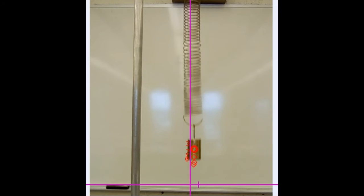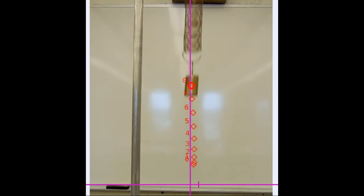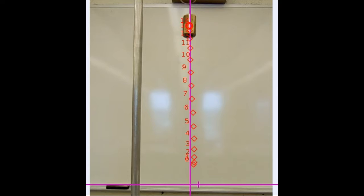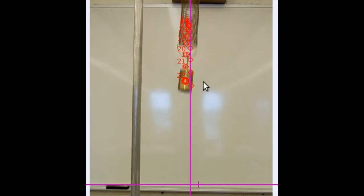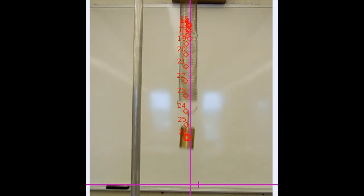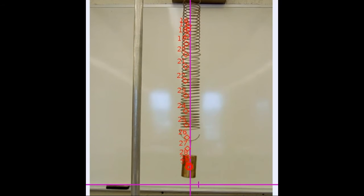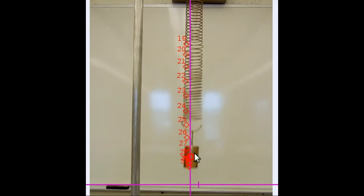If you watch the mass on the spring in slow motion — especially with video analysis software making a motion diagram over it — you can see that it moves slowly at the ends of its motion and most quickly in the middle. The points in the motion diagram are very close together at the ends, showing slow movement, and far apart in the middle, showing where it's moving the most quickly.